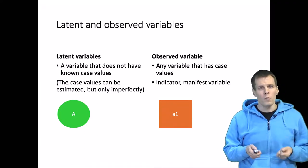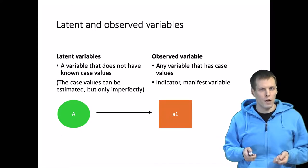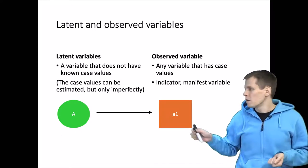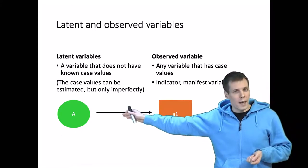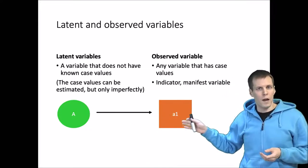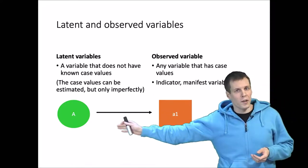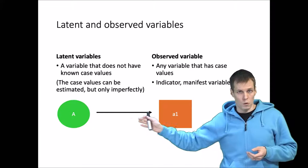Normally we want to say something about these latent variables by analyzing the observed variables. We typically assume that the latent variables exist and they cause variation in the observed variables, and that variation allows us to say something about latent variables that are unobserved sources of variance.